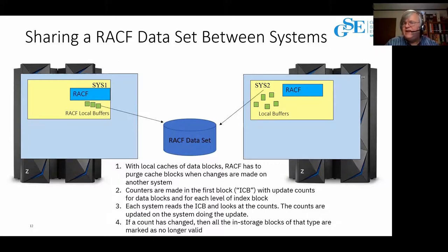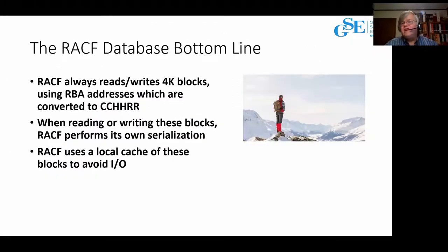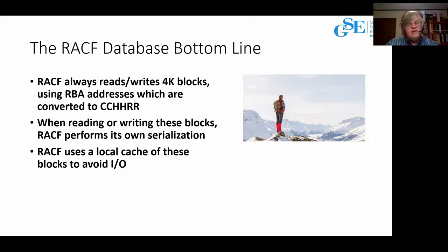So the bottom line: everything in the RACF database is written in 4K chunks using cylinder-head-record addressing. We translate the RBA into that. When reading or writing those blocks, RACF performs its own serialization and maintains a local cache of those blocks to avoid IO as much as possible. That's the quickest overview I've ever done of the RACF database.